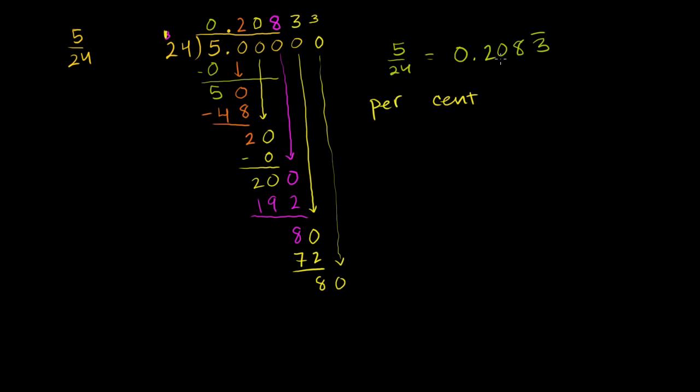So what is this? This is 0.20. What is this per 100, where 100 is a whole? One way you could view this is this is the same thing as, you could view it as this way. This decimal, 0.2083 repeating, is the same thing as 20.83 repeating over 100. This is how many we have per 100%. Or you could say that this is equal to 20.83 repeating per 100. These are equivalent.